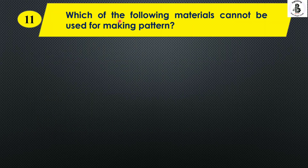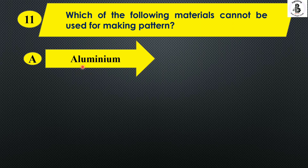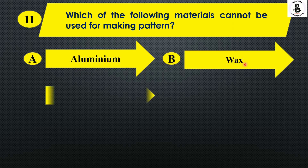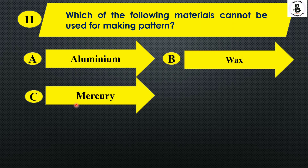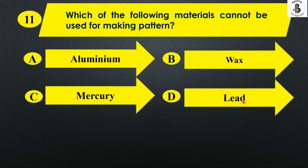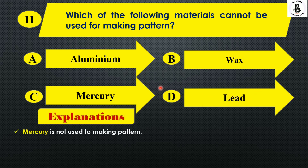Which of the following materials cannot be used for making a pattern? Option A aluminum, Option B wax, Option C mercury, and Option D lead. Aluminum, wax, and lead can be used as pattern materials, but mercury cannot be used as a pattern material. The right answer is Option C.